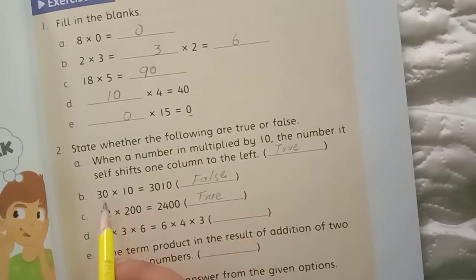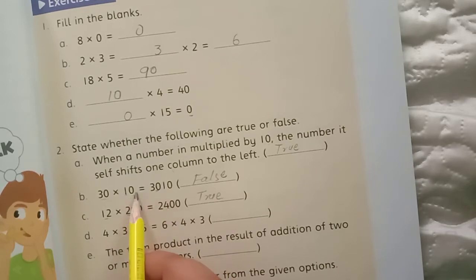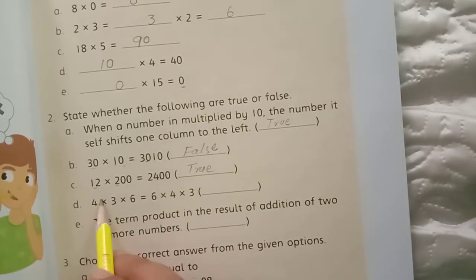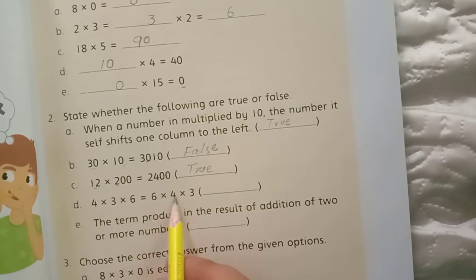We are going to apply this formula: multiply the numbers. 4 multiply by 3, multiply by 6, equals 6 multiplied by 4 multiplied by 3.